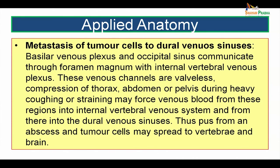Metastasis of tumor cells to the dural venous sinuses: the basilar venous plexus and occipital sinus communicate through the foramen magnum with the internal vertebral venous plexus. These venous channels are valveless, so compression of the thorax, abdomen, or pelvis during heavy coughing or straining may force venous blood from these regions into the internal vertebral venous system and from there into the dural venous sinuses. Thus, pus from an abscess or tumor cells may spread to the vertebrae and brain tissue.